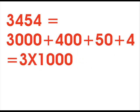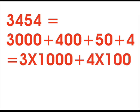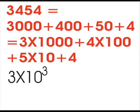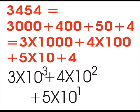Means 3 into 1000 plus 4 into 100 plus 5 into 10 plus 4. This can also be written as 3 into 10 to the power of 3 plus 4 into 10 to the power of 2 plus 5 into 10 to the power of 1 plus 4 into 10 to the power of 0.